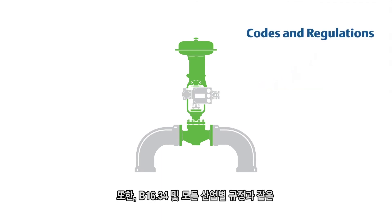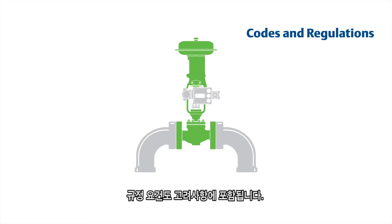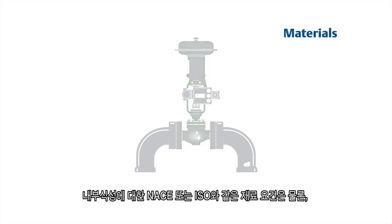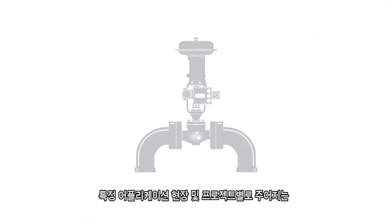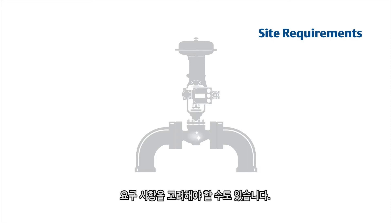You also need to consider code requirements such as B16.34 and any industry-specific regulations. There are material requirements such as NACE or ISO for corrosion resistance, and there may also be specific application, site, and project requirements that need to be taken into consideration.